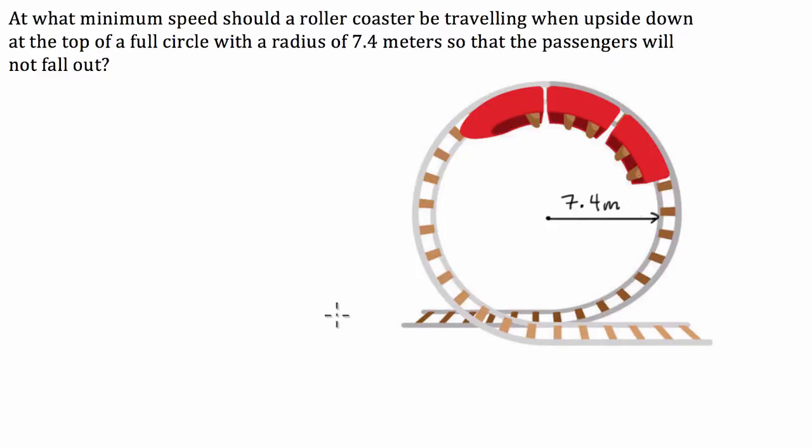So, the minimum speed required for the carriages to pass through the loops safely. To start this question off, we're going to have to have a look at the forces that are going to be acting on the passengers throughout the loop. Now, in this example, we're having to examine specifically at the top of the loop.